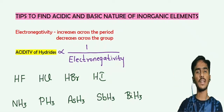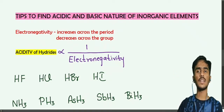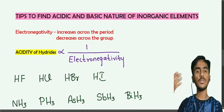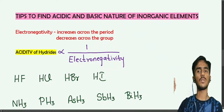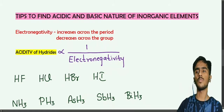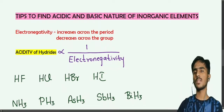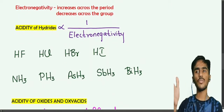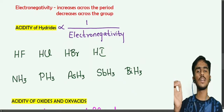First, we have hydrides. The acidity of hydrides is inversely proportional to electronegativity. So, if electronegativity is less, acidity is less. For example, consider HF, HCl, HBr, and HI.